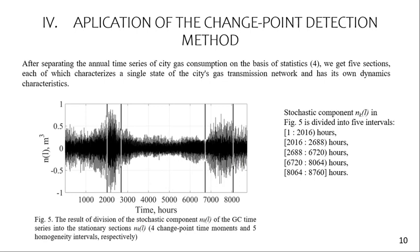After separating the annual time series of city gas consumption on the basis of statistics (expression 4), we obtain 5 sections, each of which characterizes a single state of city gas transmission with its own dynamic characteristic.